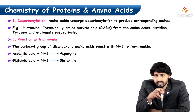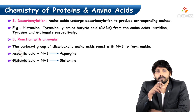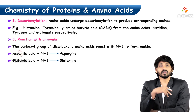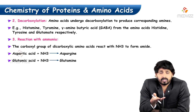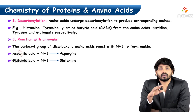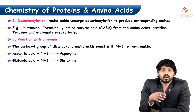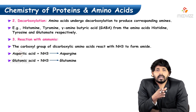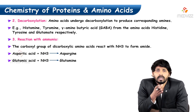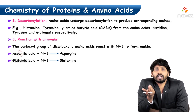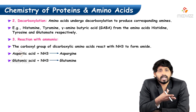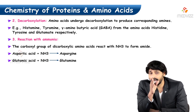Histamine is produced in allergic reactions. In reaction with ammonia, the carboxylic group of dicarboxylic amino acids — those carrying two carboxylic groups — reacts with ammonia to form an amide. Aspartic acid, an acidic amino acid with an extra carboxyl group, accepts ammonia and forms the corresponding amide, asparagine. Similarly, adding ammonia to glutamic acid forms glutamine.